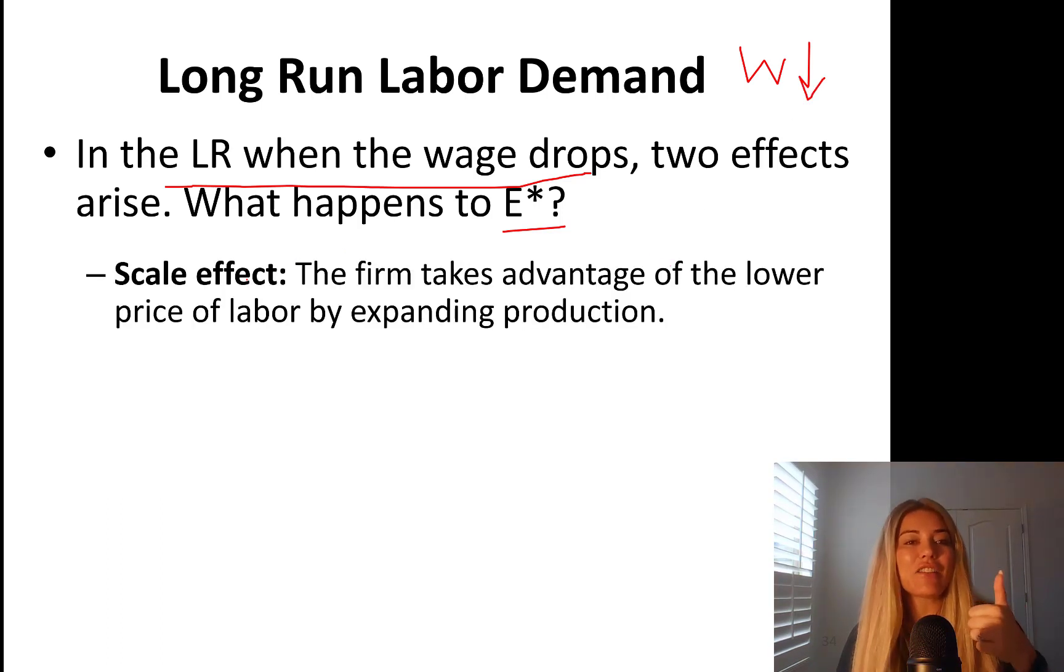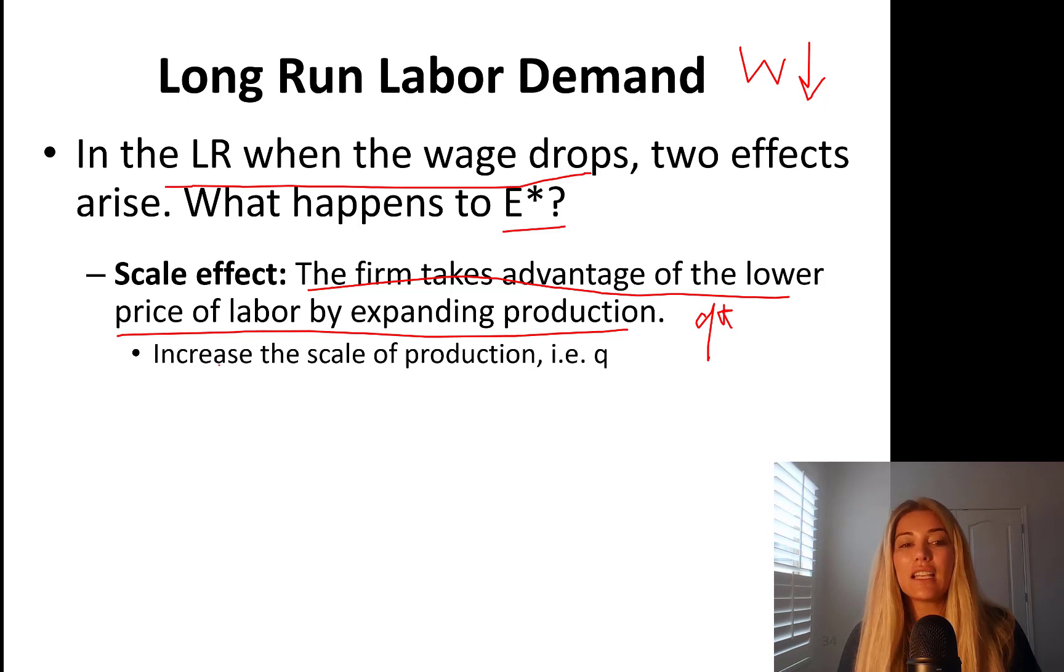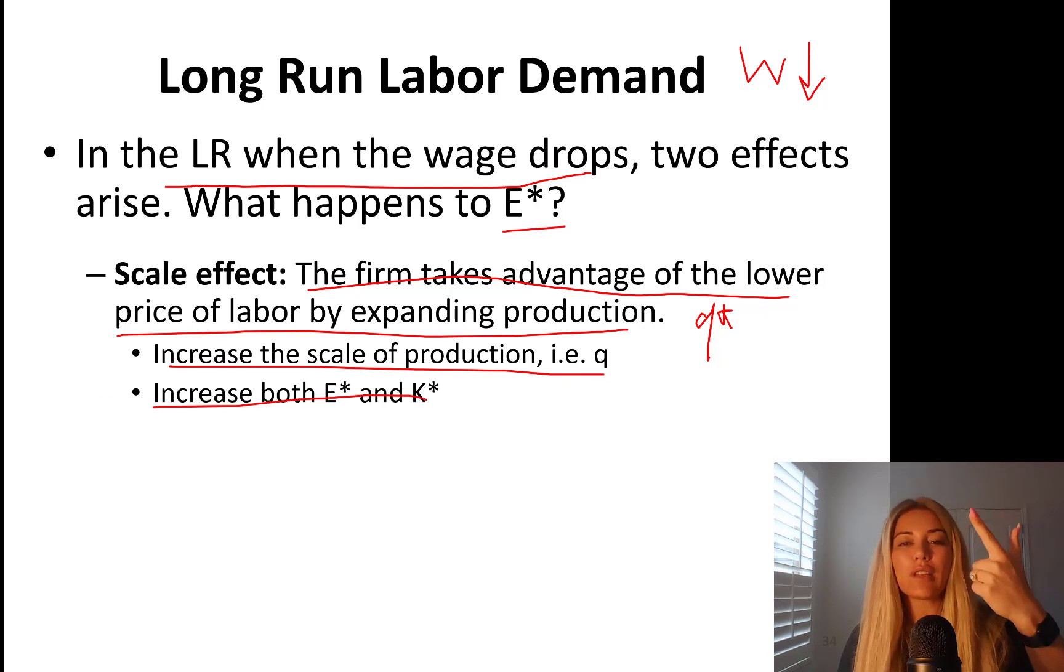The first effect is scale effect. Scale effect says that this firm now will take advantage of the lower price of labor by expanding production. Q star will be higher. This is the scale effect. Increasing the scale of production, in other words, quantity produced, will yield, I need to hire more workers and more capital. Two things are going to happen. Wages go down. Scale effect says hire more of everything.